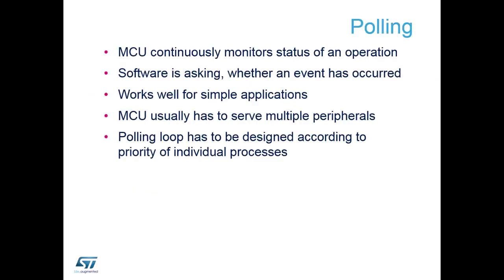With polling, the microcontroller is permanently waiting for something to happen — permanently monitoring a bit or a flag to see if it's been set before proceeding to the next section of the software. This method works very well when the application is fairly simple. If the application doesn't have many peripherals to service, polling is very helpful. You can see exactly what's going on and you're in full control of the priority, configuring which conditions must happen before others.